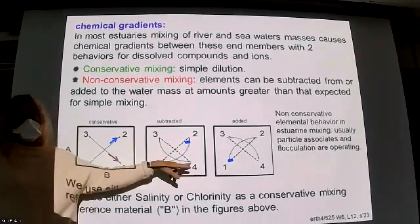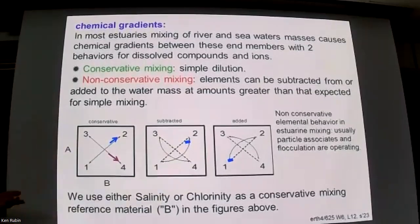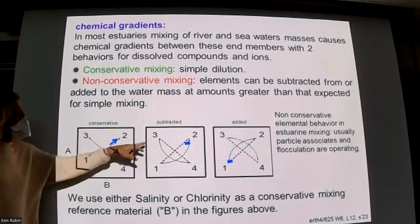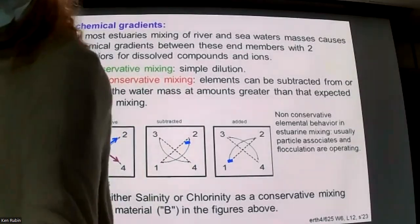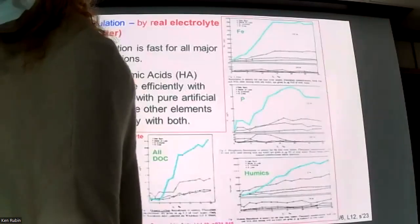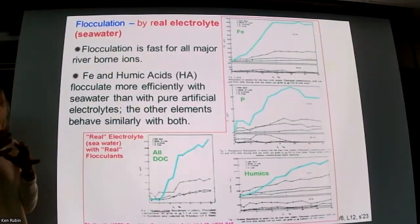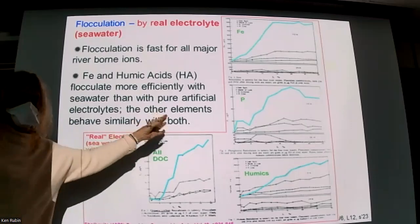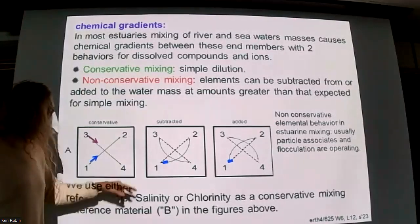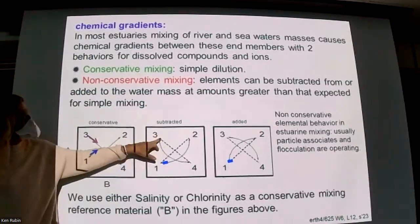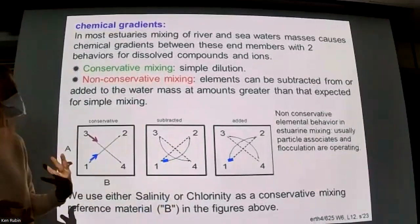We'll see many elements behave like this. The more salt you put in, the more it gets deflected down. Not every river acts the same — some rivers are more sensitive than others because of their particle load, giving different shapes. The extremeness of the parabola — sometimes close to the line, sometimes coming way down — is a function of the particle characteristics.